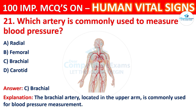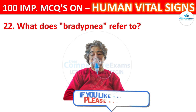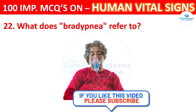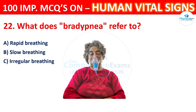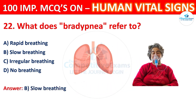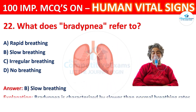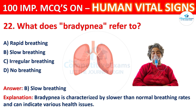Question 22: What does bradypnea refer to? Options: rapid breathing, slow breathing, irregular breathing, or no breathing. The correct answer is B, slow breathing. Bradypnea is characterized by slower than normal breathing rates and can indicate various health issues.